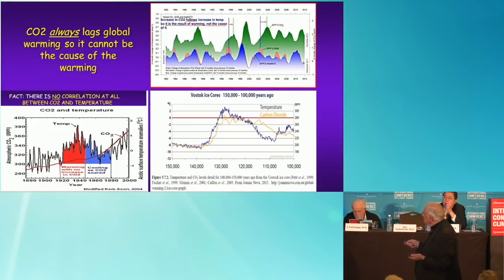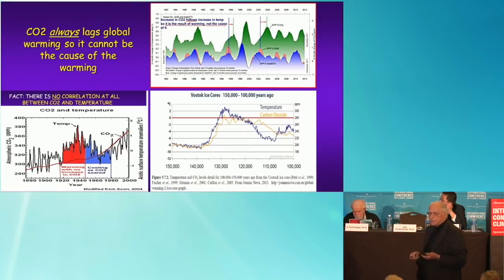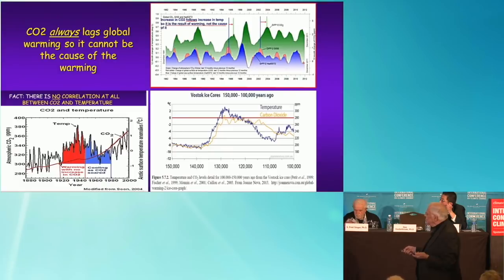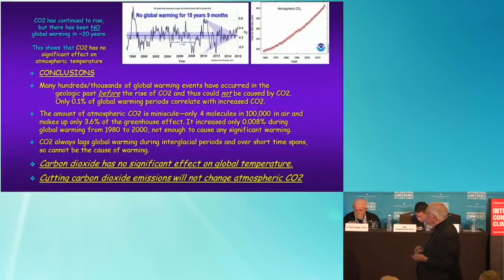It's even true on a shorter term. Here is temperature — the blue curve — and the green is carbon dioxide. If you take the peak of temperature and the peak of carbon dioxide, carbon dioxide, even in the short term, always lags temperature. And research has shown that there's no correlation at all between CO2 and temperature. This line right here is carbon dioxide; here is warm temperature, here is cool temperature — and there's no correlation.